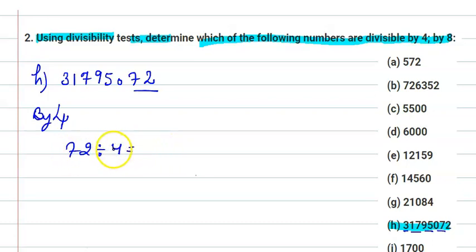So you can check here, it is 72 divided by 4. Four ones are 4, four eights are 32. So it is divisible by 4. So we can say that 31795072 is also divisible by 4.